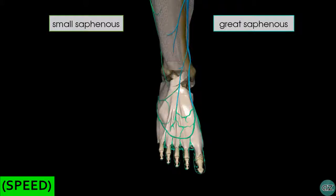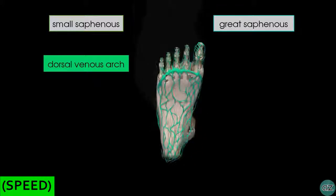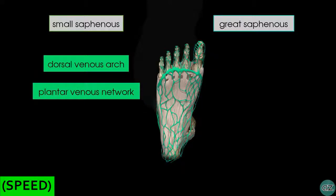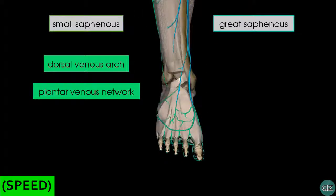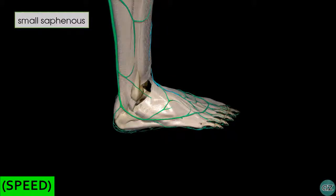Looking at the dorsal aspect of the foot, here we have the dorsal venous arch, which drains the dorsal aspect of the foot. On the plantar aspect there is a venous network which drains the plantar structures. Rotating to a lateral view, we can see the small saphenous vein arising from the lateral aspect of the dorsal venous arch and passing behind the lateral malleolus to ascend the leg.